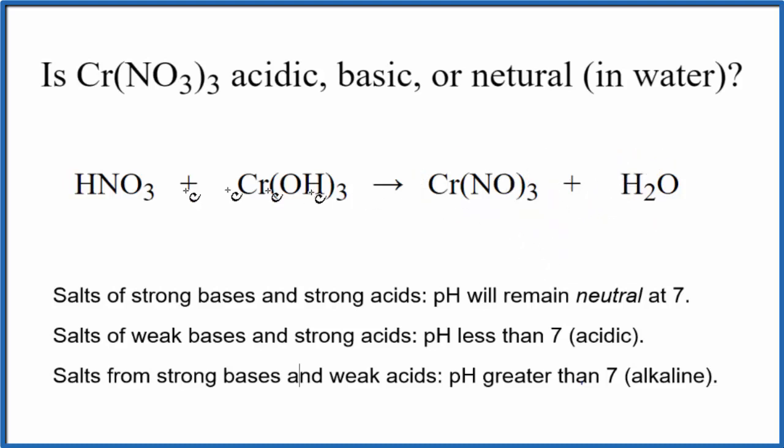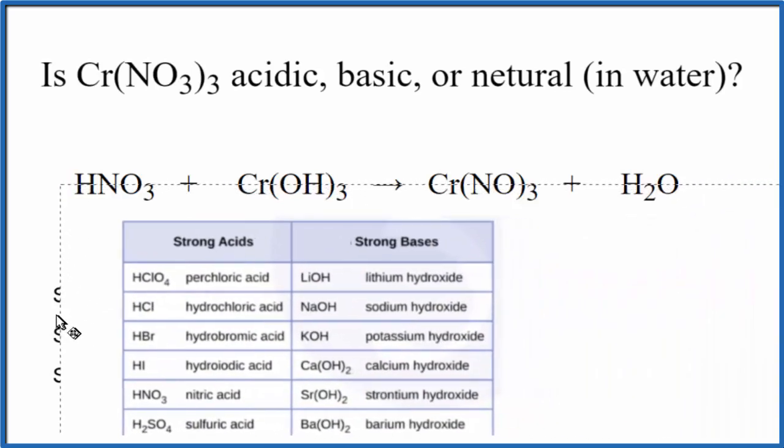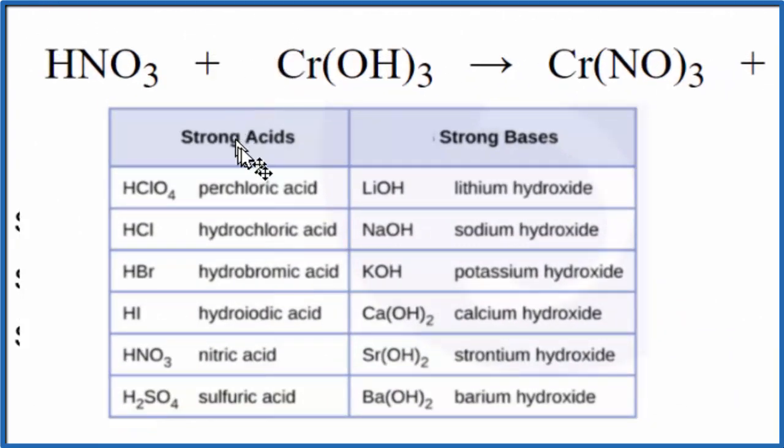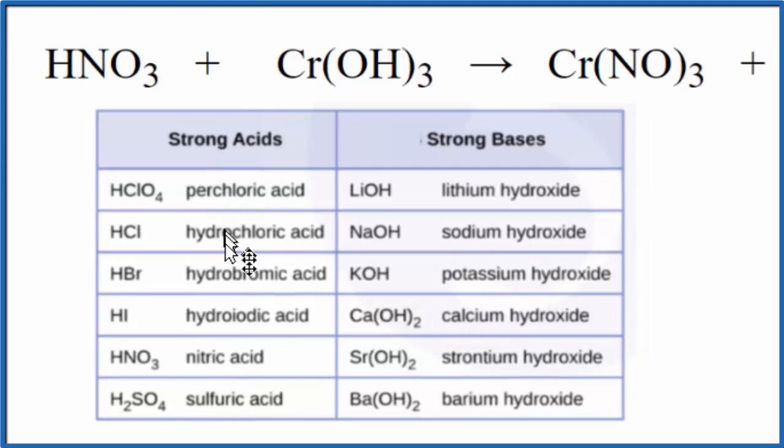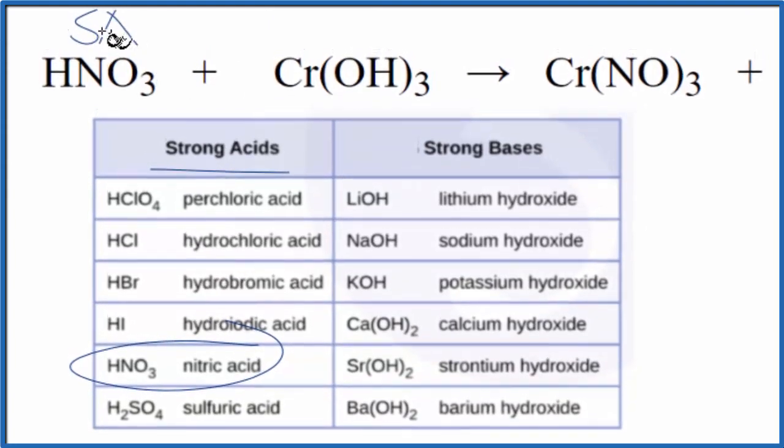Once we have the reaction, we need to look at the strength of the acid and the base so we can use these rules. So this is a good table to memorize. We're looking at the table here, and we have nitric acid right here. That's a strong acid.